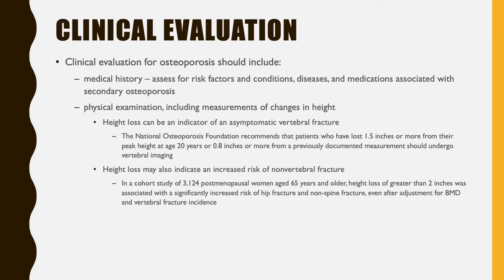If somebody comes into your office and you're thinking about screening or evaluating somebody for osteoporosis, the first thing to do is gather a thorough medical history, assessing for risk factors and conditions, diseases, and medications that could be associated with secondary osteoporosis. In the physical exam, it's very important to include measurements of changes in height. Height loss can be an indicator of an asymptomatic vertebral fracture. The National Osteoporosis Foundation recommends that patients who have lost 1.5 inches or more from their peak height at age 20, or 0.8 inches or more from a previously documented measurement, should undergo vertebral imaging. Vertebral compression fractures can be diagnosed on x-ray or by vertebral fracture assessment at the time of the DEXA if available.